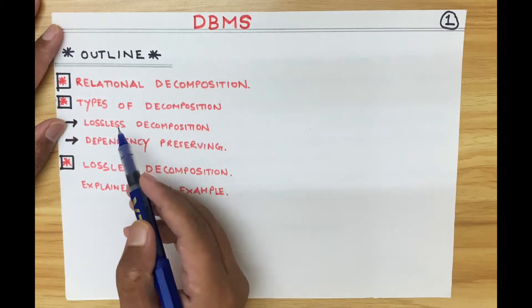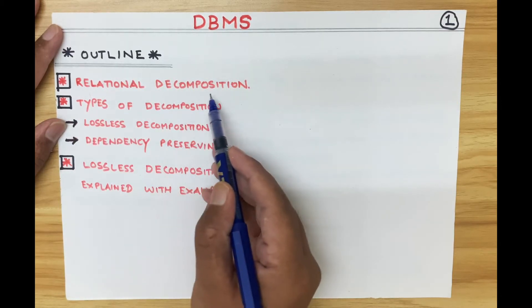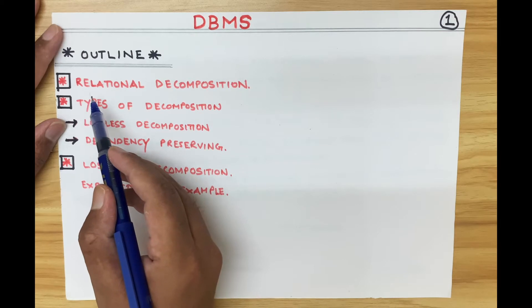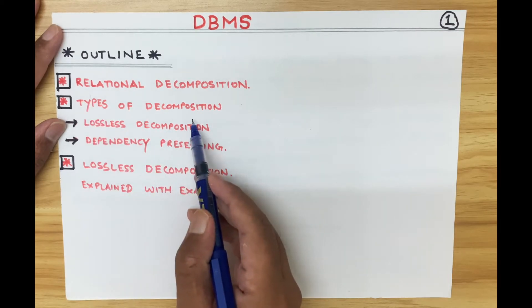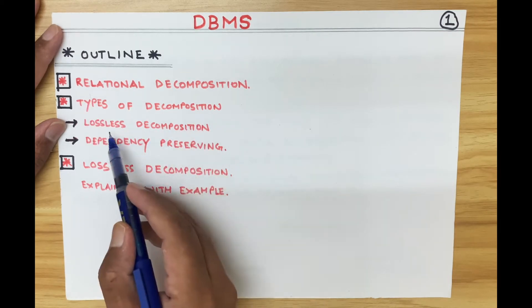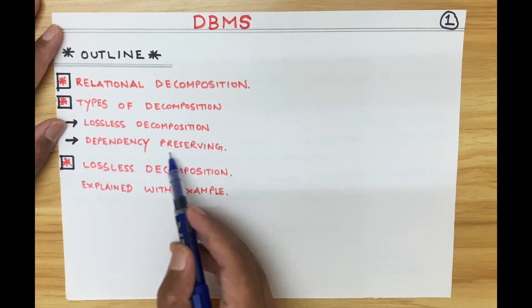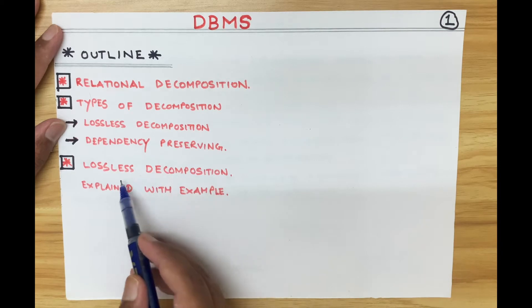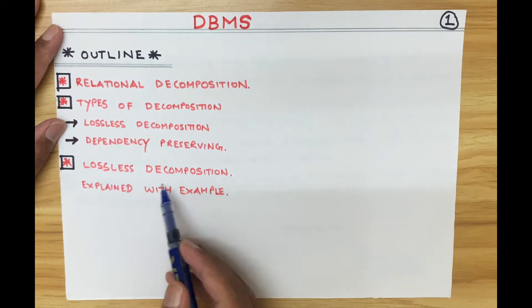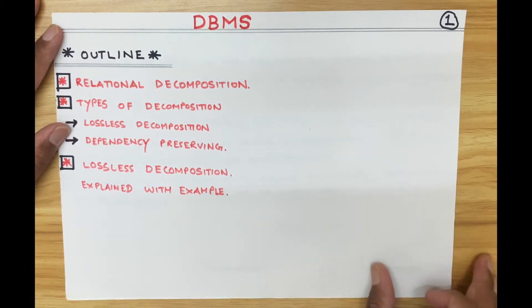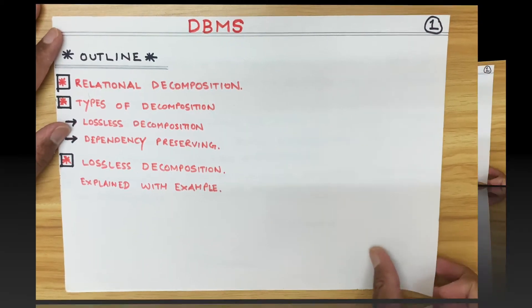The outline of this video is relational decomposition. We will study in this lecture: types of decomposition, lossless decomposition, dependency preserving decomposition, and lossless decomposition explained with an example. Let's get started.